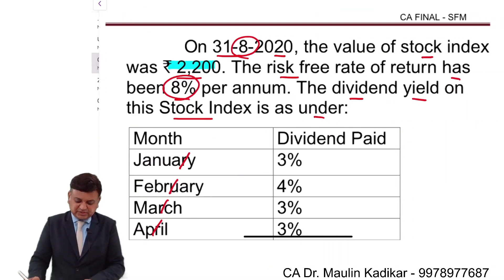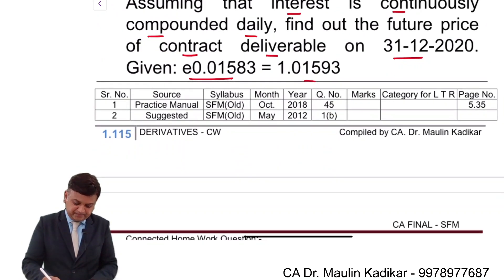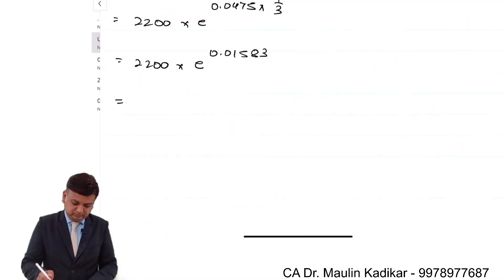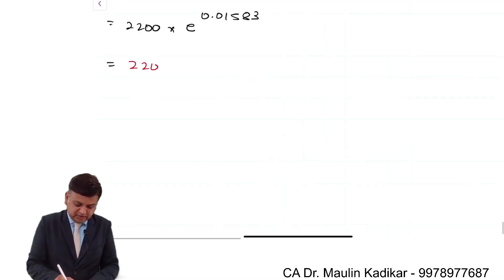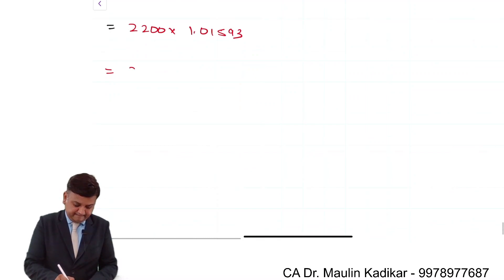You can see that in the question, the future value factor is provided to us - e^0.01583 and its value is 1.01593. So 2,200 × 1.01593 equals 2,235.046.